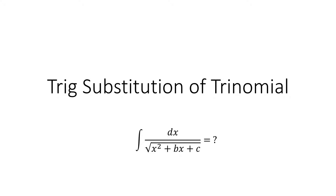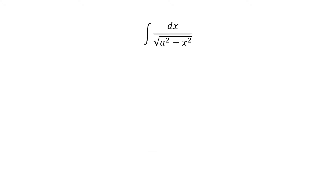Today we'll be doing trig substitution of a trinomial. Usually when we have trig substitution, we're doing something of the form integral dx over the square root of a squared minus x squared — we have two terms usually, not three. So that's our first key difference. I'm not going to get into the details of this more basic example, just trying to draw some parallels for when we do the more advanced example of the trinomial.